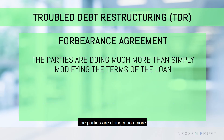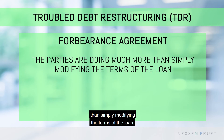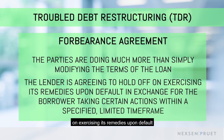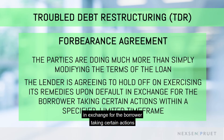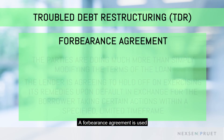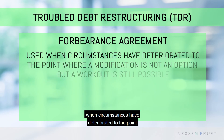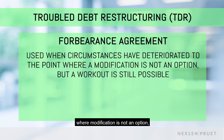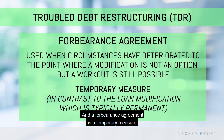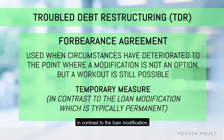With a forbearance agreement, the parties are doing much more than simply modifying the terms of the loan. The lender is agreeing to hold off on exercising its remedies upon default in exchange for the borrower taking certain actions within a specified limited time frame. A forbearance agreement is used when circumstances have deteriorated to the point where modification is not an option, but a workout is still possible. And a forbearance agreement is a temporary measure, in contrast to the loan modification, which is typically permanent.